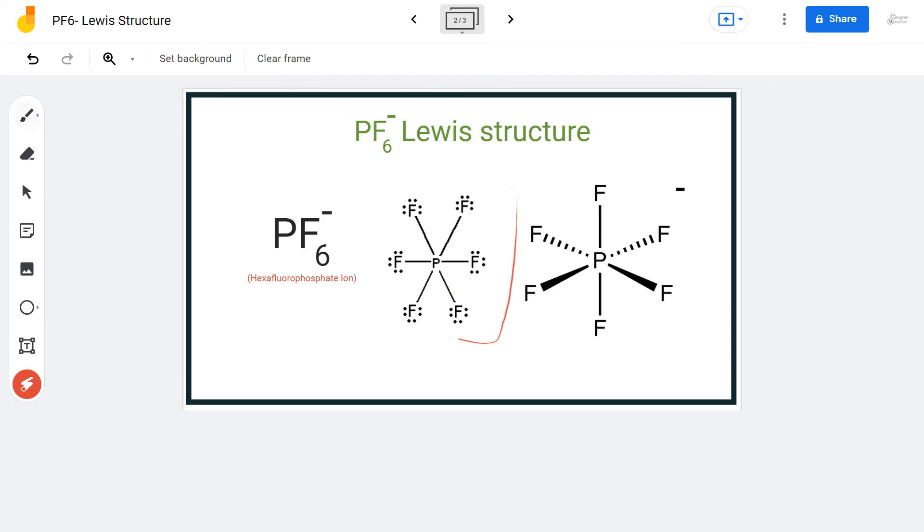So this is the Lewis structure for PF6 minus. Do not forget to put brackets and mention the charge because we are writing a Lewis structure for the ion. Always remember to mention the charge in brackets whenever you are drawing Lewis structures for an ion.